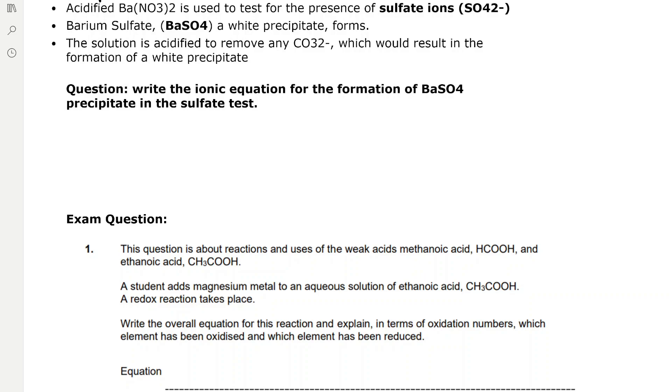We've got a question: write the ionic equation for the formation of barium sulfate precipitate in the sulfate test. In this ionic equation, we're forming barium sulfate from barium nitrate, which is made up of Ba2+ and NO3- ions. We're reacting it with a sulfate, which has SO4 2- ions. So we need to identify all of our spectator ions and remove them.